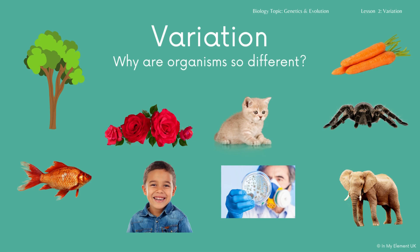For example, if we pick the kitten and the spider, there are lots of obvious differences. You can talk about number of legs, fur, and shape. They are two very different species. The same applies if we compare the goldfish with the elephant. So the variation between species is quite big, but the variation within a species won't be as big and there'll be more similarities.